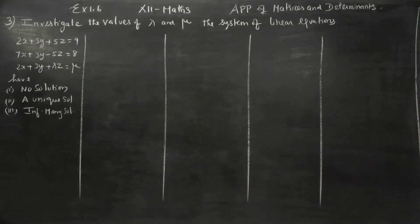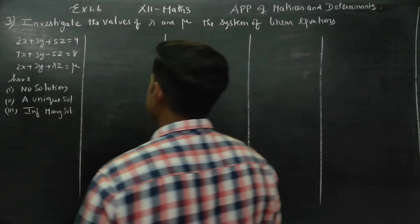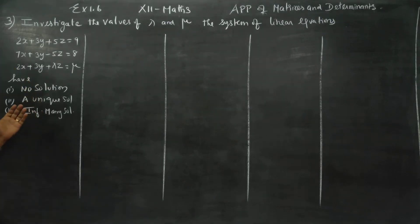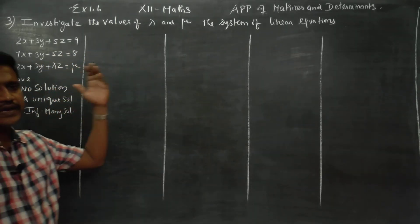Hello 12th standard students, myself Karanagaran. In exercise number 1.6, applications of matrices and determinants, sum number 3: investigate the values of lambda and mu for the system of linear equations. Three conditions — no solution with rules and values, unique solution lambda and mu, and infinitely many solutions lambda and mu.